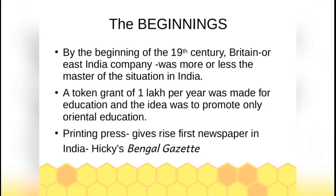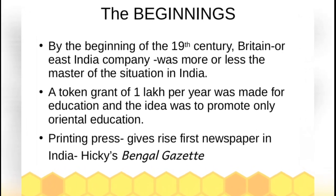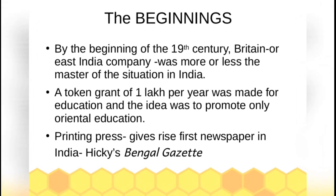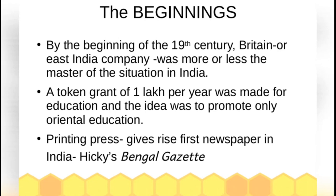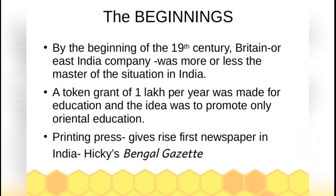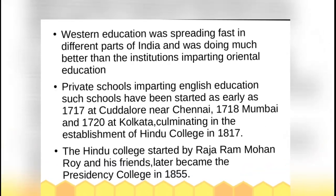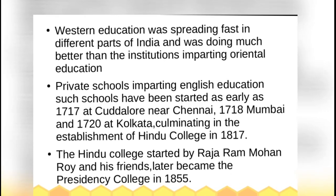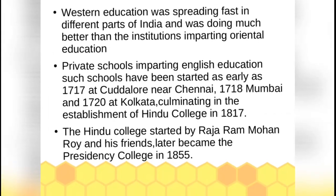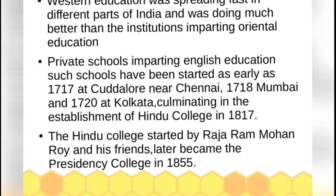To educate Indians, they not only opened public and private schools but also set up printing presses across the country. Along with grammars, dictionaries, and translations, the printing press gave rise to the first newspaper in India, named Hickey's Bengal Gazette. The first college was set up in Cuddalore near Chennai in the 1770s, a second in Mumbai in 1718, a third in Kolkata in 1720, and most importantly, Hindu College was established in 1855 — known today as Presidency College.